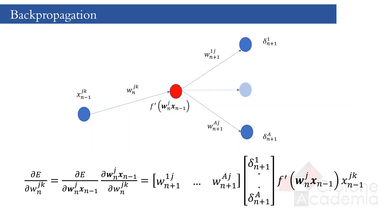Let's summarize how backpropagation works. If we consider an arbitrary node j in layer n, we are targeting its incoming weights Wnjk. In order to do that using gradient descent, we are interested in finding the derivatives of the error with respect to those incoming weights, that is ∂E/∂Wnjk. We saw that this derivative depends on the variable delta n+1, which can be regarded as the component of the error propagating backwards from the next layer. If we consider layer n+1, we can show that delta n+1 depends on delta n+2, and so forth.